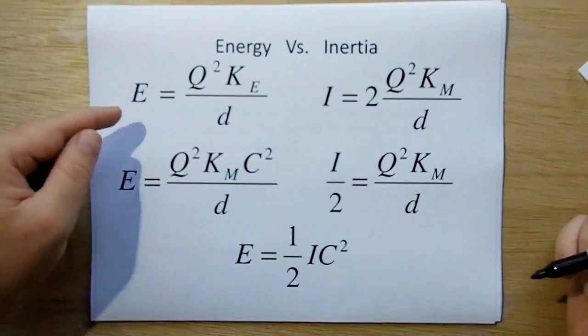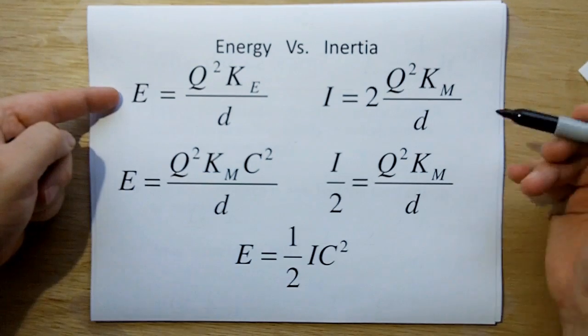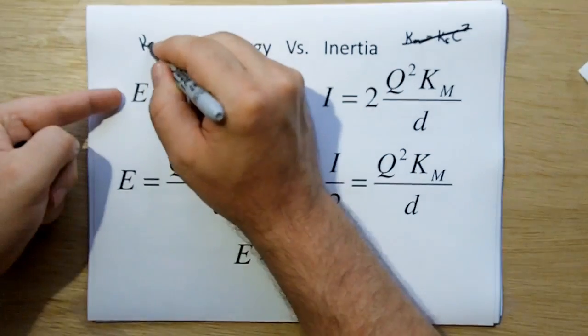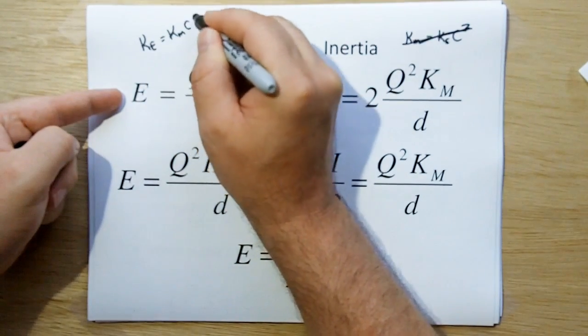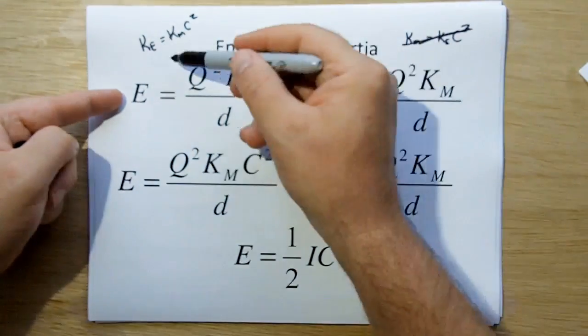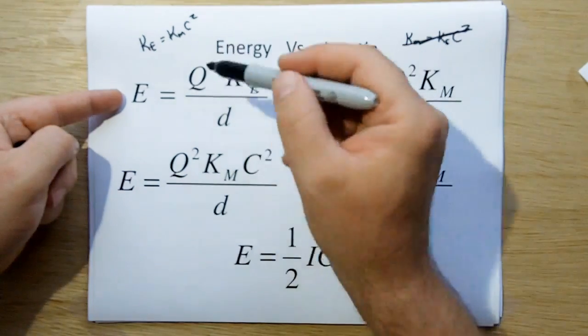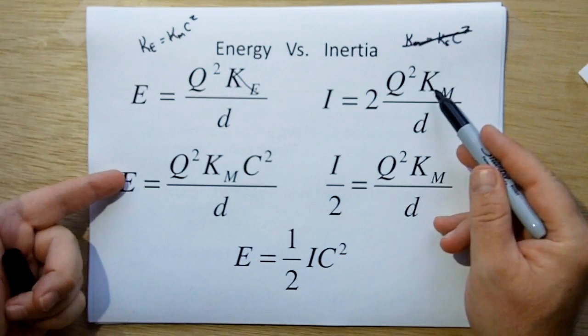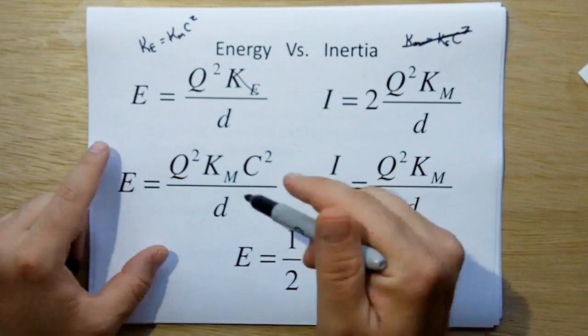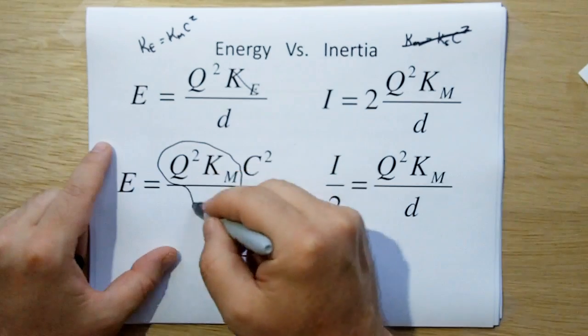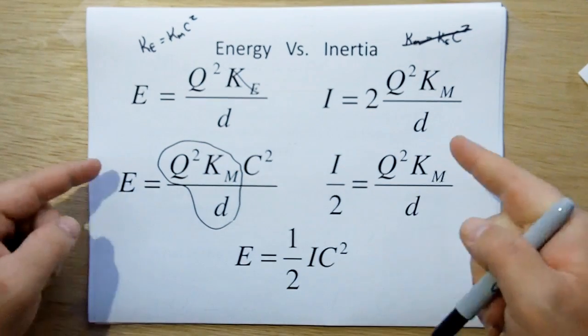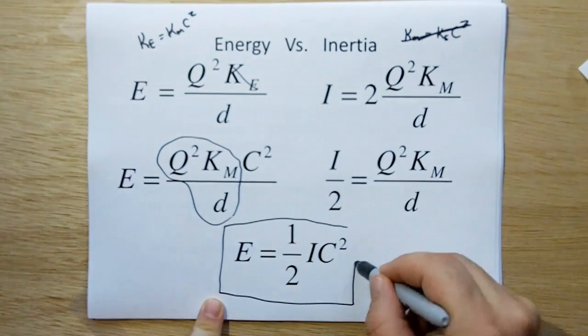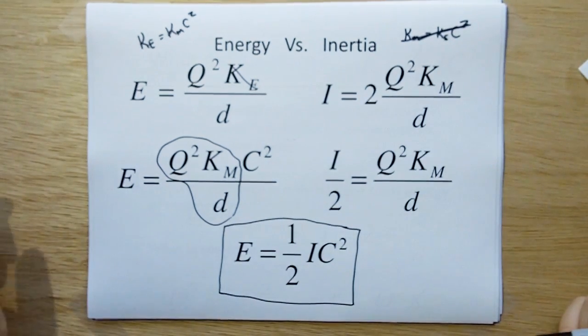Now if we put energy over here, and we put inertia over here, and then you realize that Ke is equal to Km times C squared. So we substitute Ke over here with Km C squared, and then we take this side, we derive for this quantity here on this side, and then we substitute one into the other, and we have the energy is equal to one-half inertia times the speed of light squared.